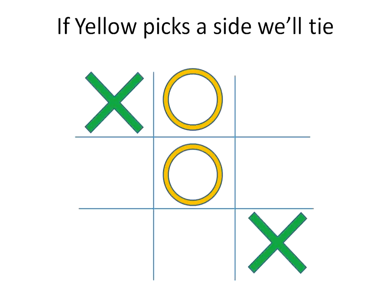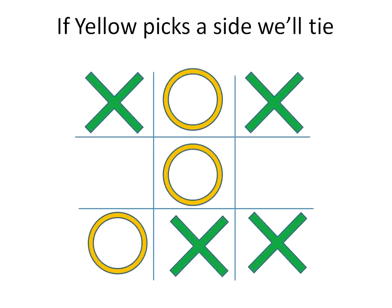Now, if the yellow side, if he picks a side, not a corner, then it'll always end up in a tie. You'll end up going back and forth. If I get two in a row, he blocks it. He gets two in a row, I block it. He blocks it, and we end up in a tie. So the worst case scenario in this is that you get a tie.